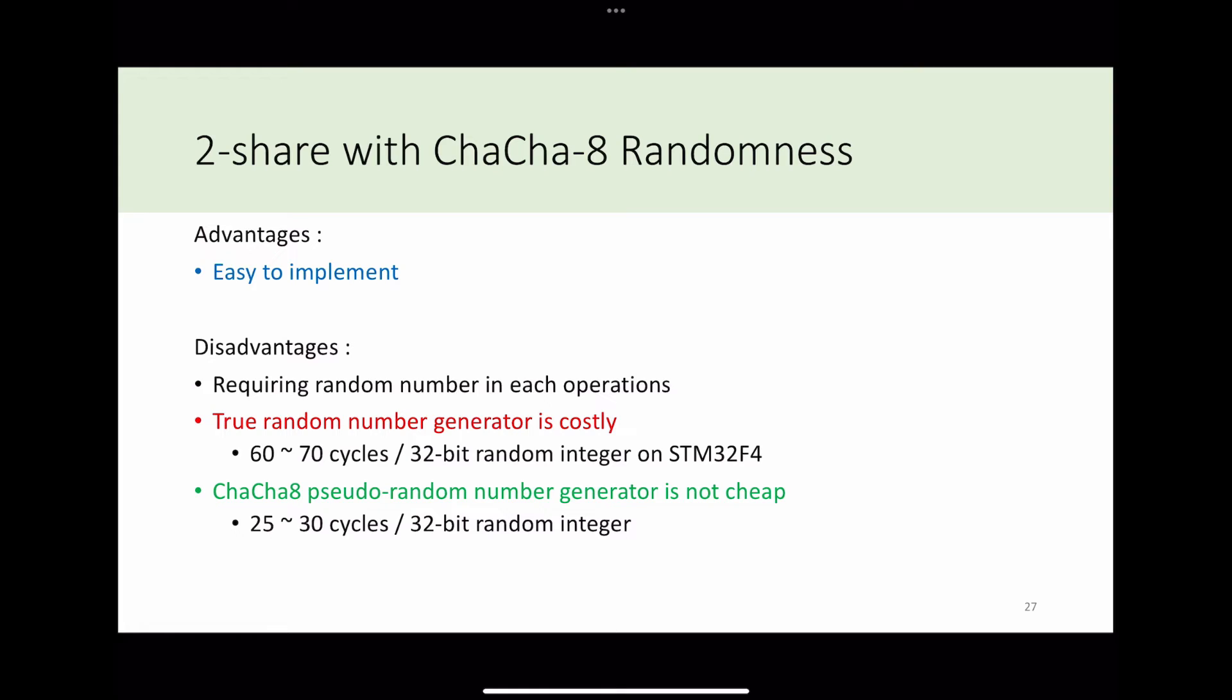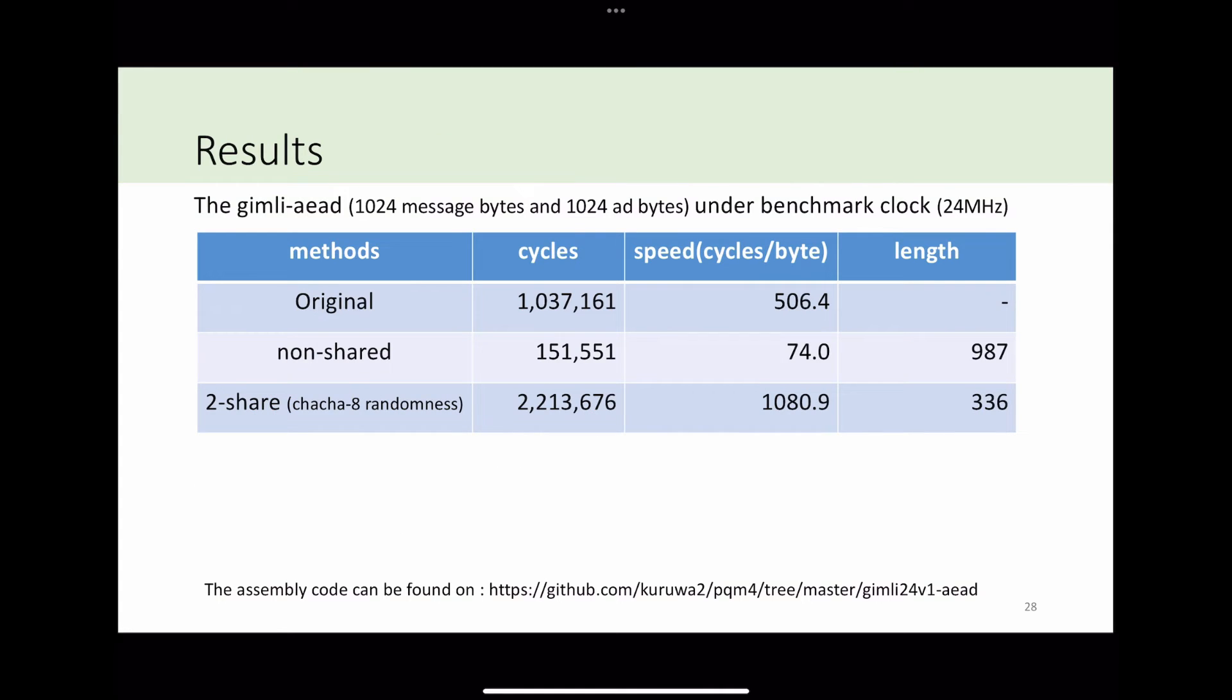This method is easy to implement, but it needs a lot of random numbers. A true random number generator is expensive. It costs 60 to 70 cycles per one 32-bit random number. Even if we use ChaCha8 pseudo-random number generator, we need 25 to 30 cycles for a random number on average. The overhead of two-share masking with randomness is very high. It costs about 1000 cycles per byte. The speed of this method is about 14 times slower than the original Gimli.